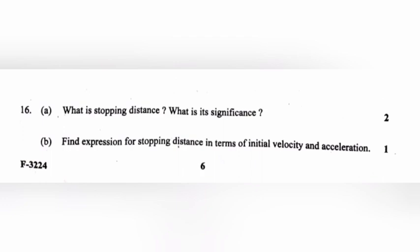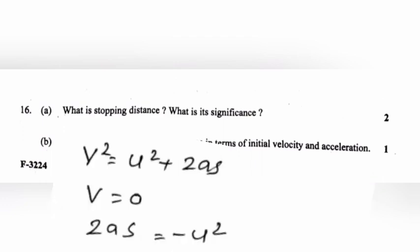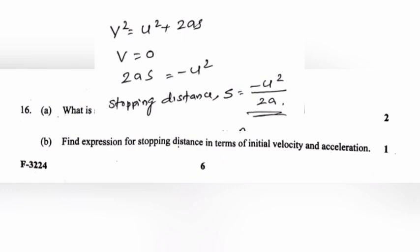Question 16B: Find expression for stopping distance in terms of initial velocity and acceleration. Answer: V square is equal to u square plus 2as. V is equal to 0. 2as is equal to minus u square. Stopping distance, that is s, is equal to minus u square by 2a.